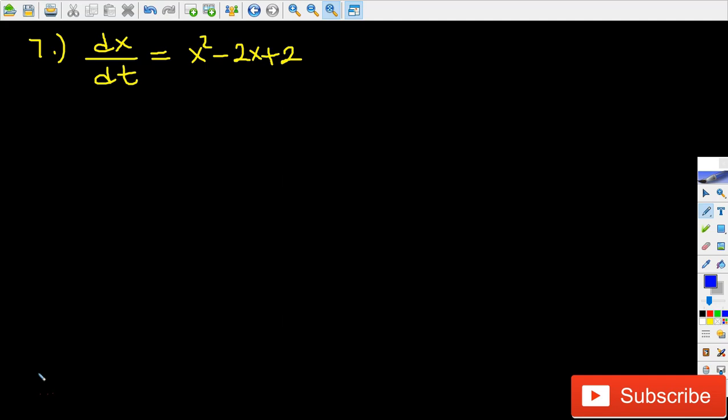This is going to be our final problem. Alright, let's get started. So what we have here: dx over dt equals x squared minus 2x plus 2.